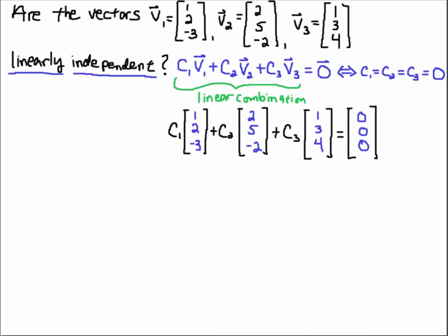What does that mean? This is a linear combination, so let me write that down given this specific example. I have C1 times the vector [1, 2, -3] plus C2 times the vector [2, 5, -2] plus C3 times the vector [1, 3, 4]. That's what this linear combination is. I set it equal to the zero vector.